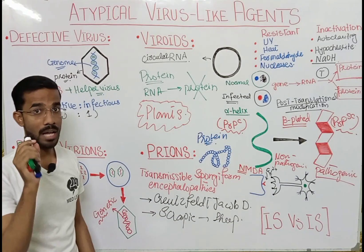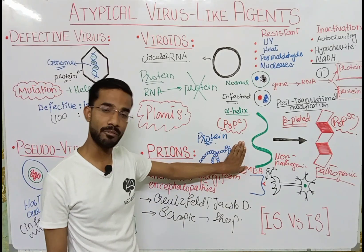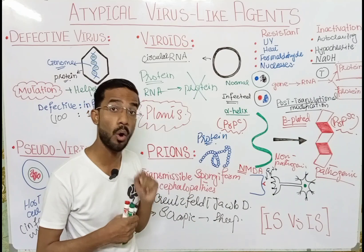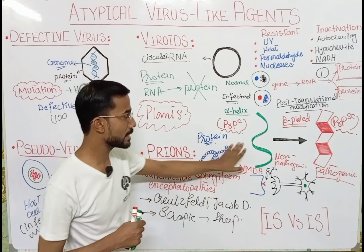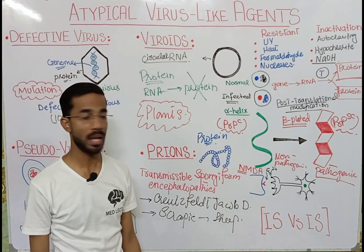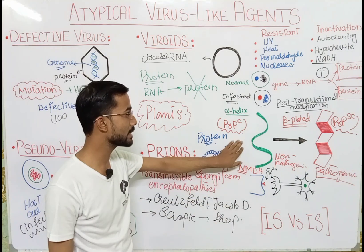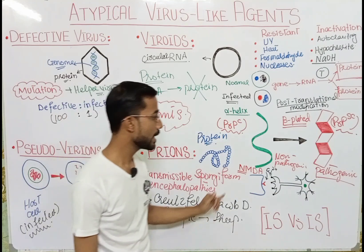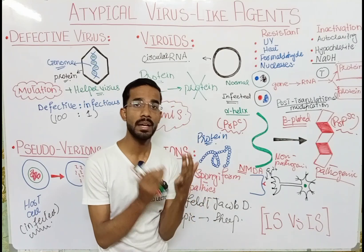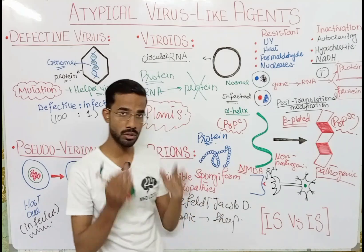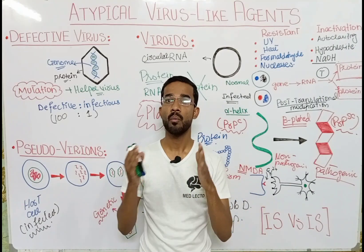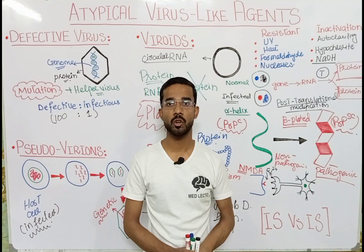The important final point: the normal alpha helix form performs normal functions in signal transduction and regulation of receptors in the brain. Because it is normal, our body will not activate the immune system or the inflammatory system against it. So there is no immune response or inflammatory response in the case of prion proteins because they are normal. This is all about the prions. In this lecture we discussed four atypical virus-like agents. If you have any questions, you may ask in the comment section. Thank you.